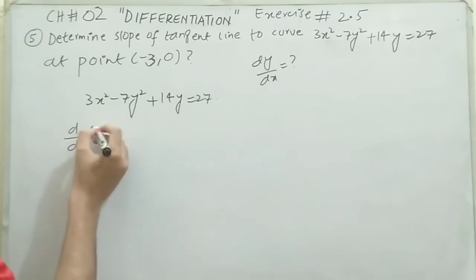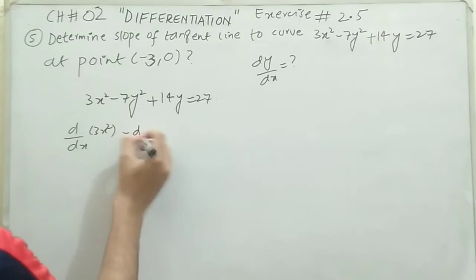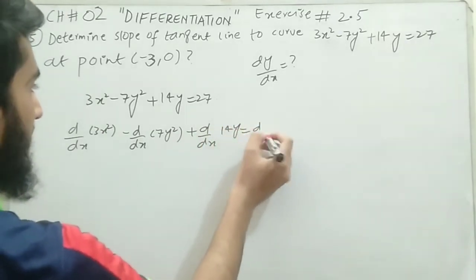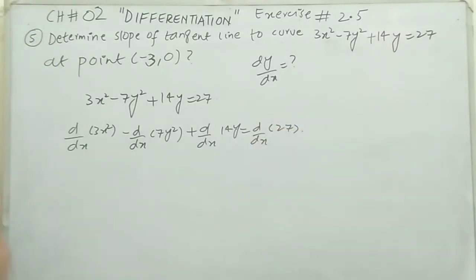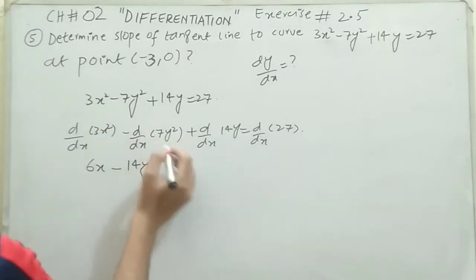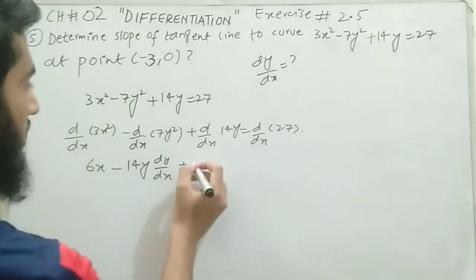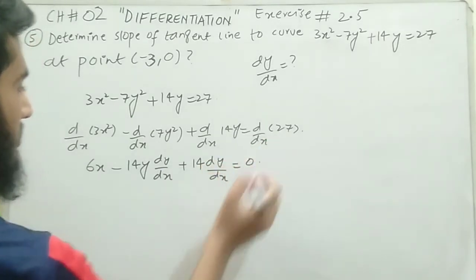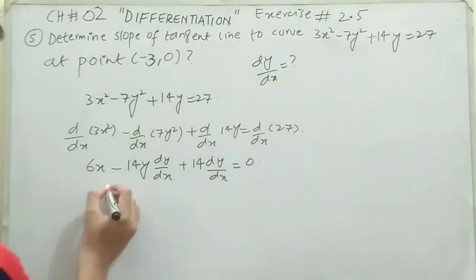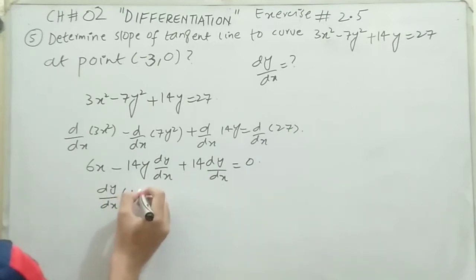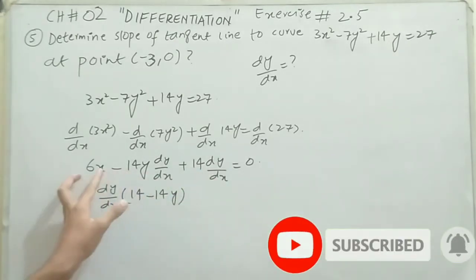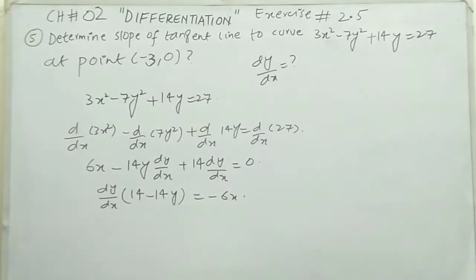Taking d/dx of each term: d/dx of 3x² minus d/dx of 7y² plus d/dx of 14y equals d/dx of 27. The derivative of 3x² is 6x. The derivative of 7y² is 14y, and since y is an inner function, we multiply by dy/dx. Plus 14 times the derivative of y is dy/dx. Equals zero, since the derivative of constant 27 is zero. Taking dy/dx as a common factor, we have 14 minus 14y times dy/dx, and shifting 6x to the right gives negative 6x.